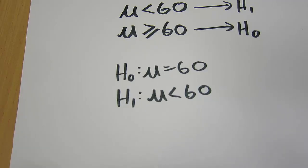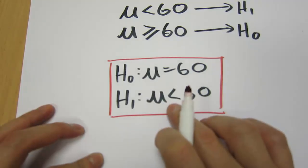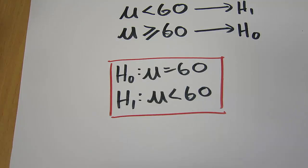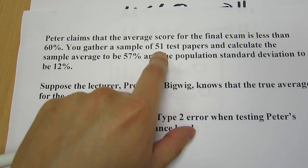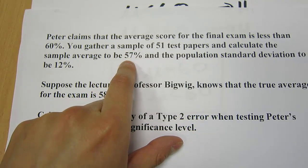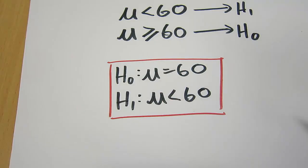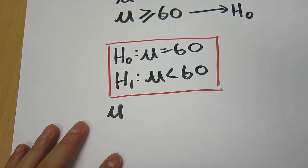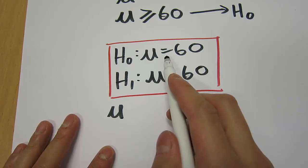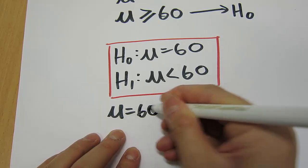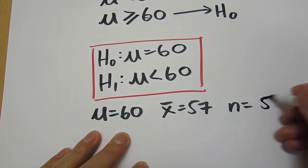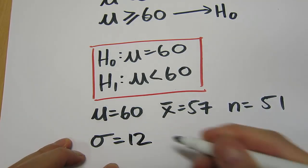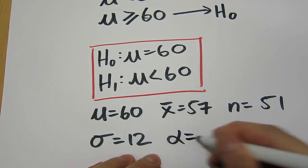We know that this is a lower tail test because the alternate hypothesis has a less than sign. The next step is to write down everything we know from the question. We're testing 51 test papers, so that's our sample size. Our sample average is 57%, and our population standard deviation is 12%. The null hypothesis is assumed true until proven otherwise, so mu equals 60. We test at the 1% significance level, so alpha equals 1%.